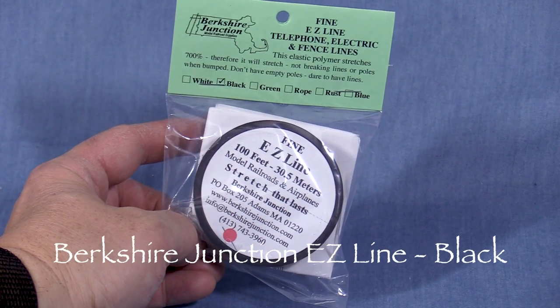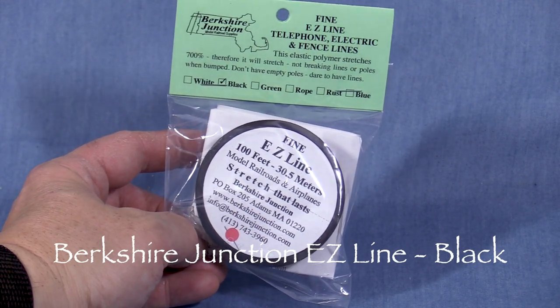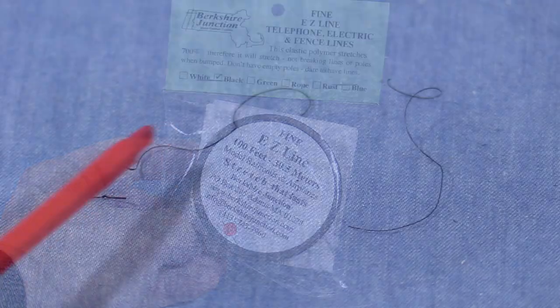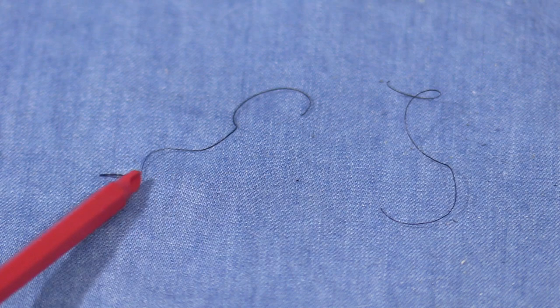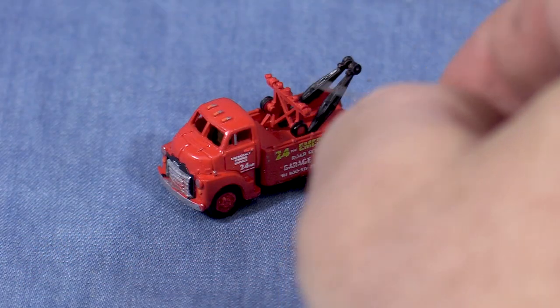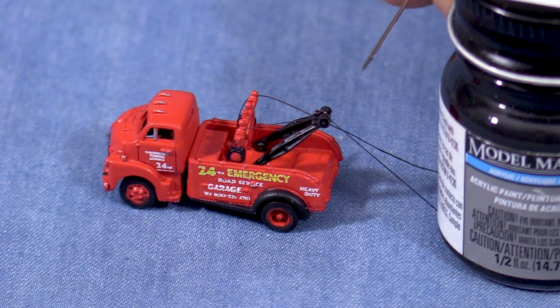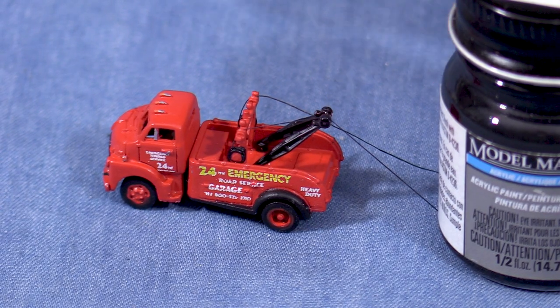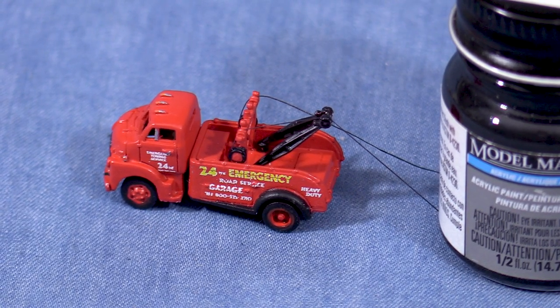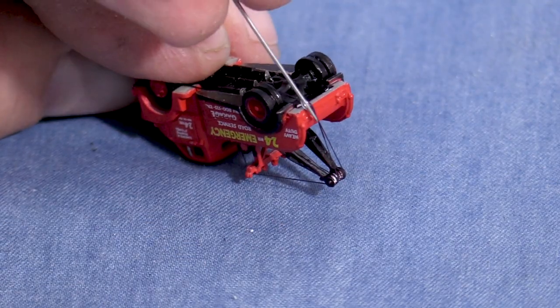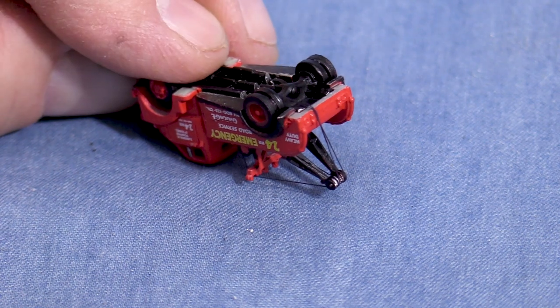For the next step, I'm using some black colored Easy Line from Berkshire Junction. This material is elastic, so if it gets bumped it will snap back into place. I've cut a couple of short lengths of the Easy Line. The instructions say to glue it to the winch wheels first with some fast CA. Once it's dry, I can use a paint bottle as a weight to hold it taut over the top of the boom. I'll put a drop of glue there. After doing one strand for each boom, I'll pull the ends together over what the instructions call the tie points.